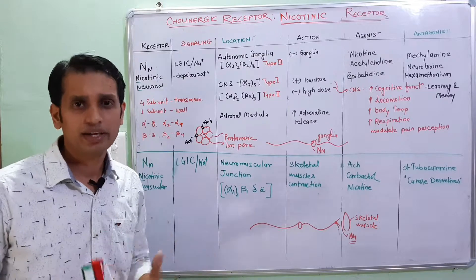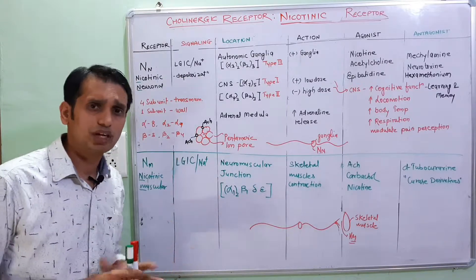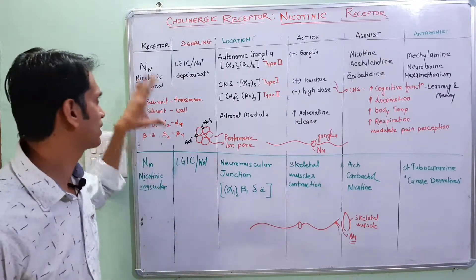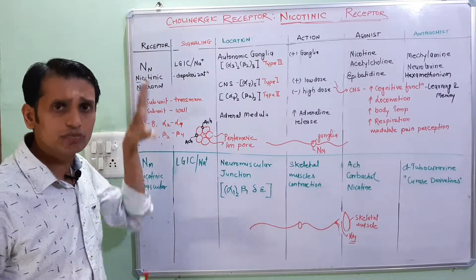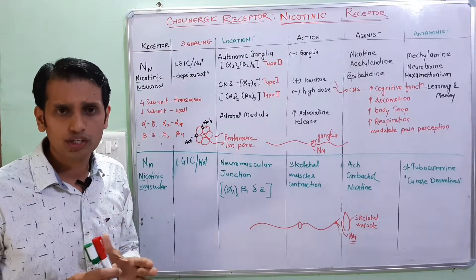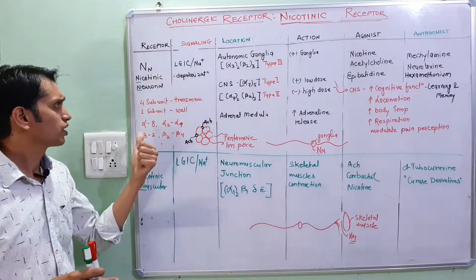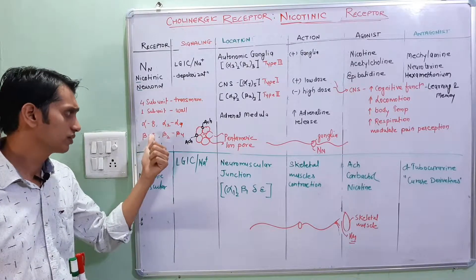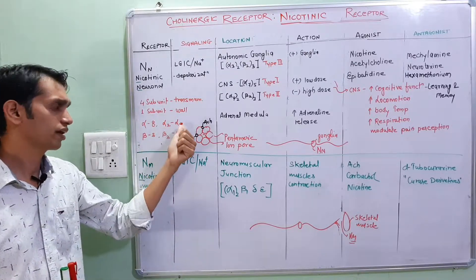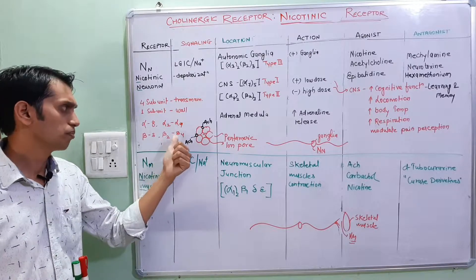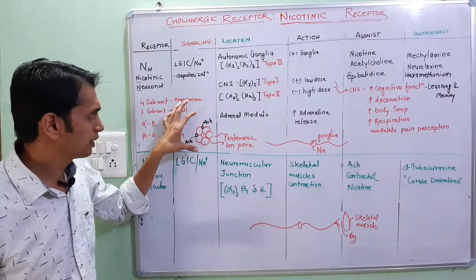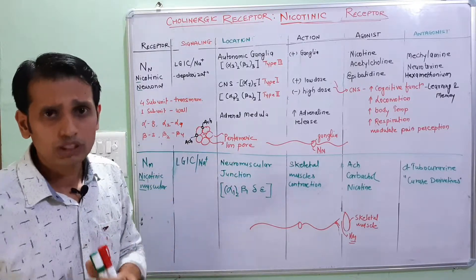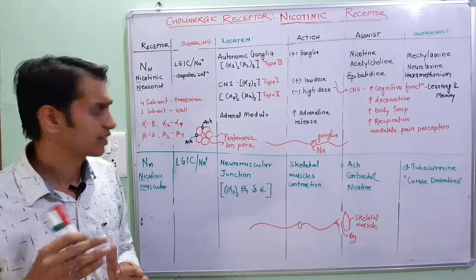Both receptor types have a pentameric structure. The NN receptors are composed of alpha and beta subunits — alpha contains subunits alpha-2 to alpha-9, and beta contains subunits beta-2 to beta-4. This is a pentameric structure and it has an ion pore for the sodium ion channel, so sodium ion is the main molecule for cellular action.